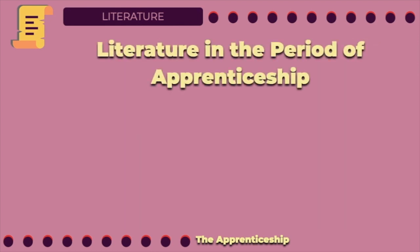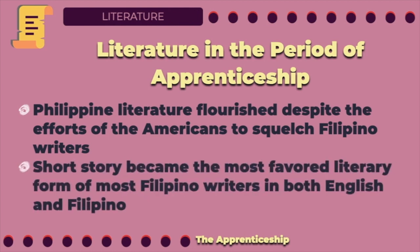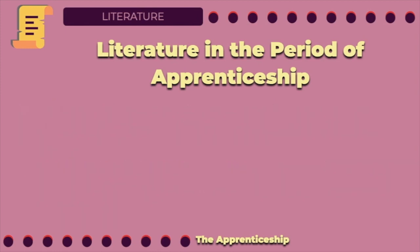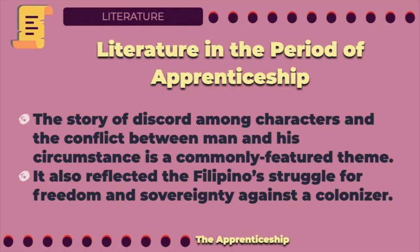In the period of apprenticeship, Philippine literature flourished despite the efforts of the Americans to squelch Filipino writers. The most favored literary form of most Filipino writers in both English and Filipino languages is the short story. In reading literary works under the period of apprenticeship, it is necessary to remember that Filipinos are still under the colony of America. Therefore, the commonly featured themes of the literary works are all about the story of discord among characters and the conflict between man and his circumstances. Also, it reflected the Filipino struggle for freedom and sovereignty against a colonizer.